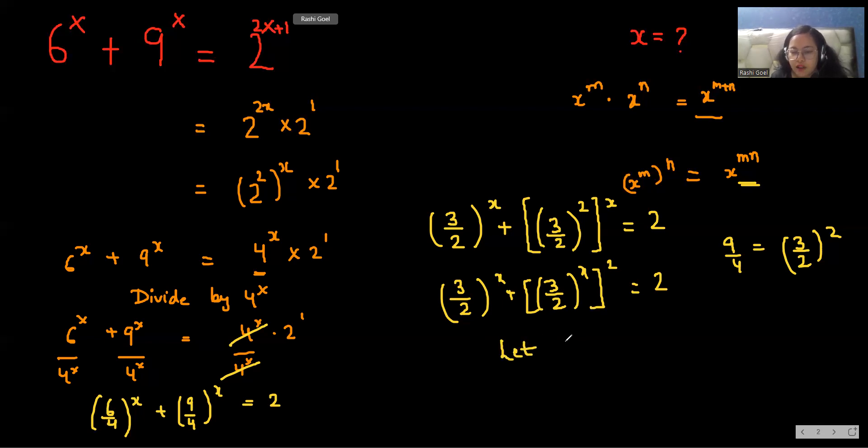So now we make a substitution and we assume as an alphabet a. a equals (3/2)^x. So instead of (3/2)^x, I can write a. So that is a plus a^2 equals 2.